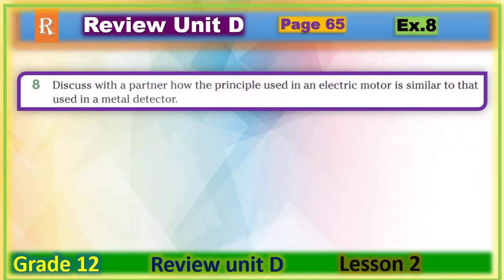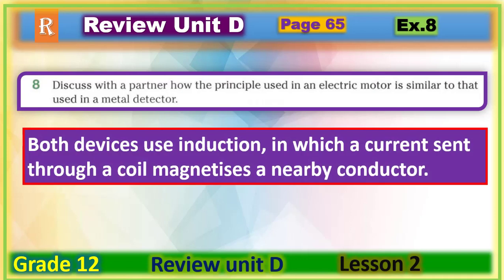Now let's move to Exercise 8: discuss with a partner how the principle used in an electric motor is similar to that used in a metal detector. The answer is: both devices use induction, in which a current sent through a coil magnetizes a nearby conductor.